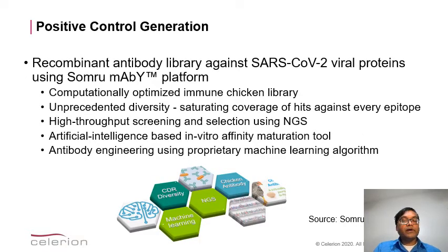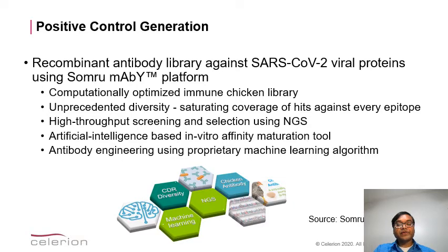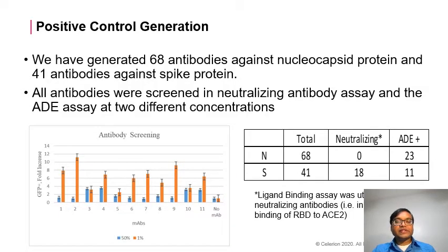One of the key factors in our success in rapid development of this ADE assay is the access to a recombinant antibody library against SARS-CoV-2 viral proteins. It is a computationally optimized immune chicken library with high diversity. Screening and selection are performed using next generation sequencing, and when we select an antibody, we can generate recombinant antibodies based on the sequence. It also incorporates artificial intelligence and machine learning algorithms for antibody engineering and in vitro affinity maturation. We generated 68 antibodies against the nucleocapsid protein and 41 antibodies against spike protein using this chicken recombinant library.